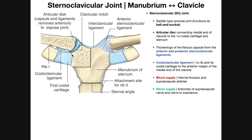There's also an attachment site for the first rib — the first rib articulates completely with the manubrium via costal cartilage. Down here is an articulation for the second rib, which actually spans both the inferior part of the manubrium and the superior part of the sternal body. Here are the two clavicles, one on the patient's right and one on the patient's left, and you can see the sternoclavicular joint.